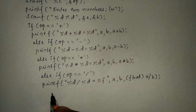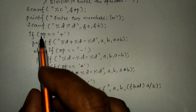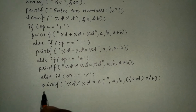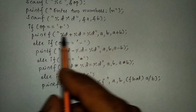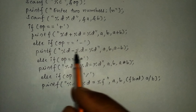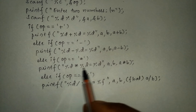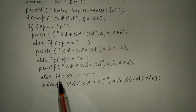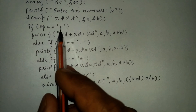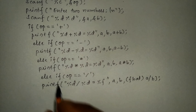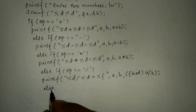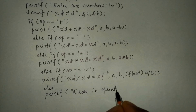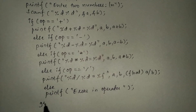Now we write the error message. If all of the above conditions are false — meaning the user enters any operator other than plus, minus, asterisk, or forward slash — the else part must execute, printing 'invalid operator'. After that we write the getch() function and the closing curly brace.